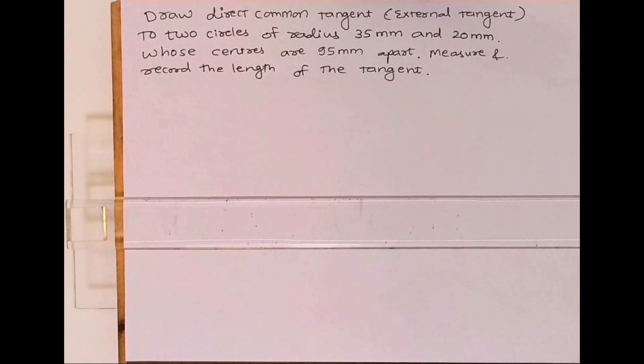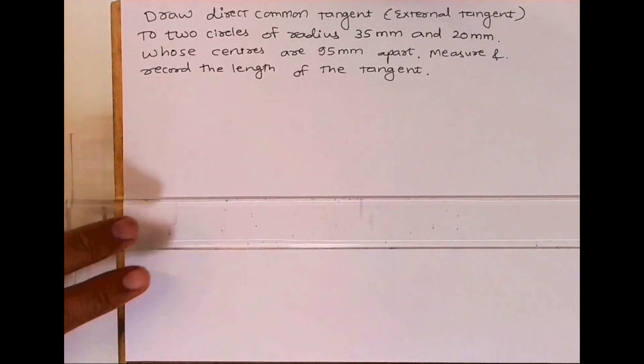Welcome to technical drawing. Today we learn how to draw a direct common tangent, also called an external tangent. Two circles are given with radii 35 and 20 mm, whose centers are 95 mm apart. We'll measure and record the length of the tangent.